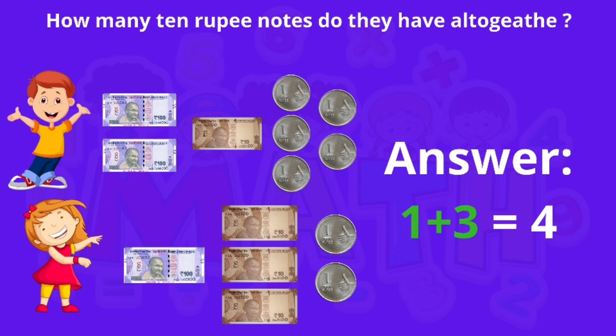Now the next question: how many 10-rupee notes do they have altogether? Tony has one 10-rupee note and Sonu has three 10-rupee notes. So the total would be 1 plus 3, that is 4. Together they have four 10-rupee notes.